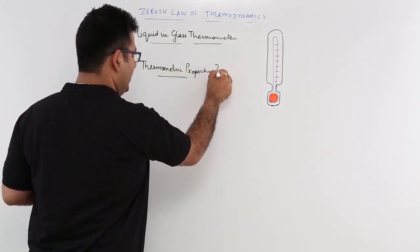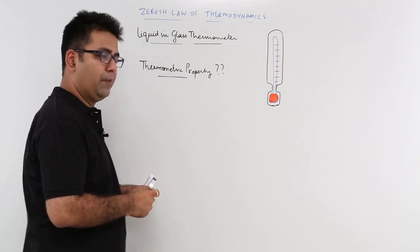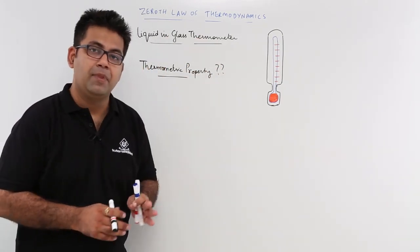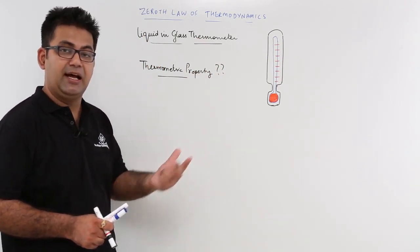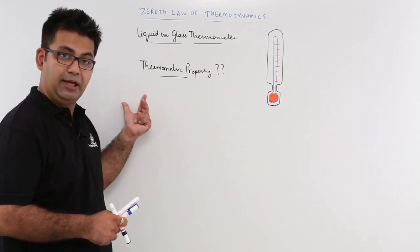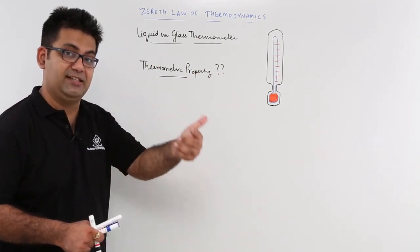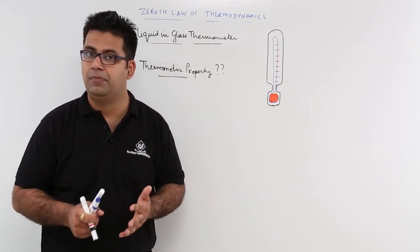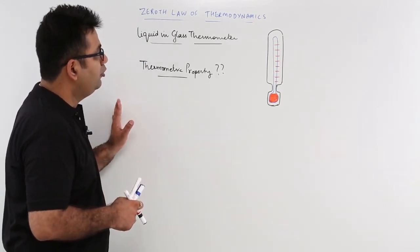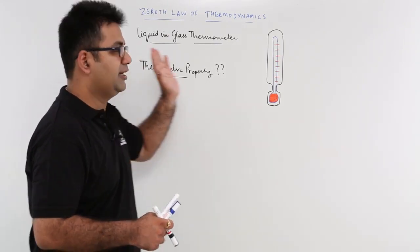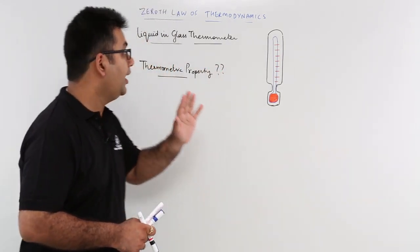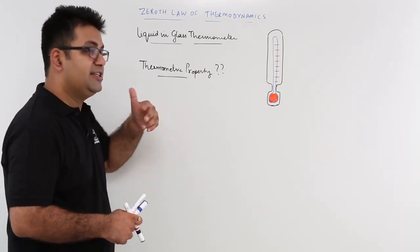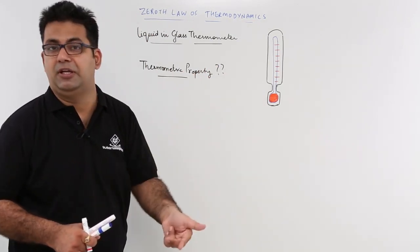What is thermometric property all about? Thermometric property is that property whose change indicates that a temperature value has changed. For example, the liquid-in-glass thermometer has a specific thermometric property which changes to indicate a temperature change.